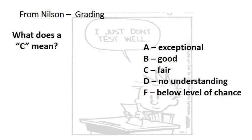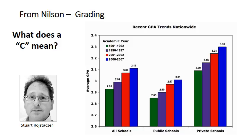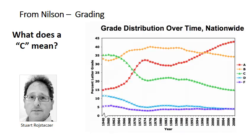The next section is on grading — what does a C mean? The right-side list shows words taken from Nielsen: exceptional, good, fair, no understanding, below level of chance — that's our A through F grading sequence. When talking about grading, it's hard to escape the topic of grade inflation. A geophysicist turned author and investigator of grade inflation shows a graph with clear trends from 1991 to 2007, where grades have inflated for all schools.